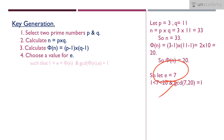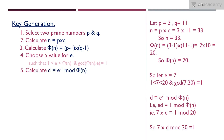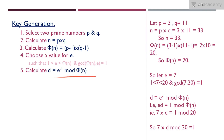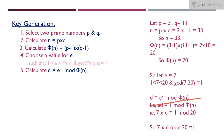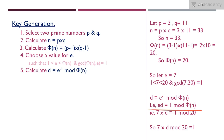The next step is to calculate d, where d equals the multiplicative inverse of e mod φ(n). To find the multiplicative inverse, we rearrange to get: e × d ≡ 1 mod φ(n). Substituting our values, with e equal to 7 and φ(n) equal to 20, we get the equation: 7 × d ≡ 1 mod 20.